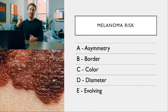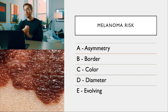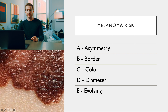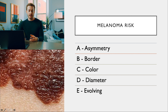The next mnemonic is ABCDE for melanoma risk. A is asymmetry — asymmetrical lesions are more likely malignant. B is border — is it smooth or jagged? C is color — is it uniform or varied? D is diameter — large or small? E is evolving — is the mole changing?